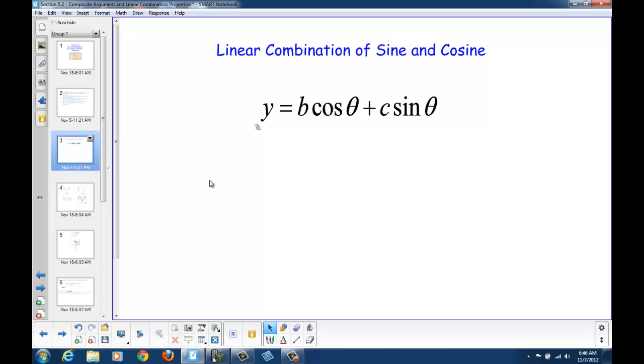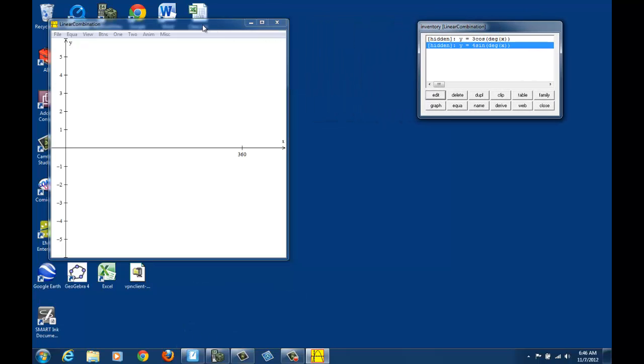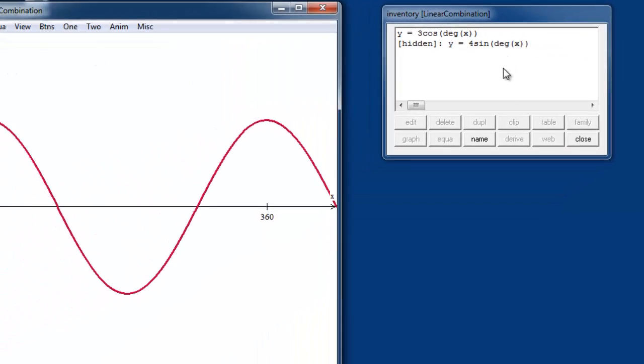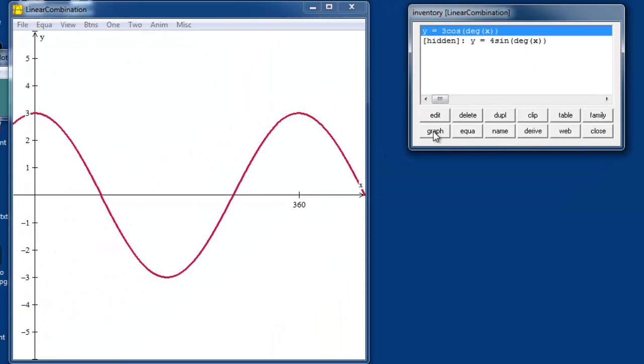Let's start by looking at a linear combination of sine and cosine, which means adding a cosine function and a sine function of equal periods but with different amplitudes. I've prepared a WinPlot file that will allow us to do this quickly and easily. So let's start by looking at the graph of 3 cosine x in degree mode.